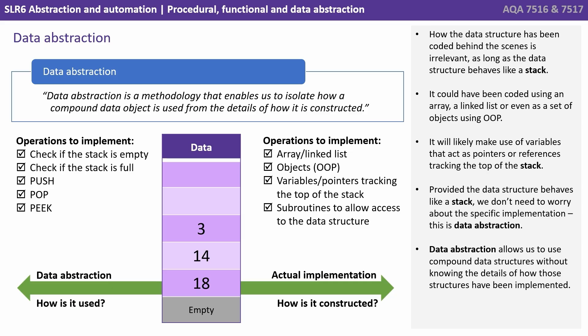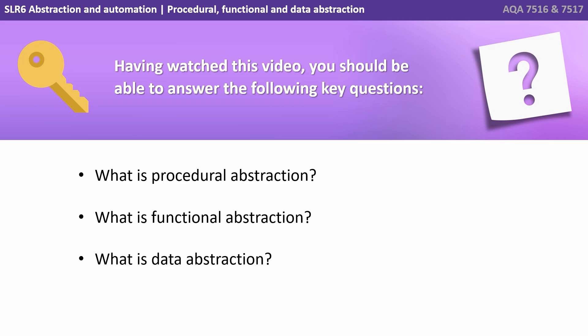And this is data abstraction. Data abstraction allows us to use compound data structures without knowing the details of how those structures have been internally implemented. Having watched this video you should be able to answer the following key questions: What is procedural abstraction? What is functional abstraction? And what is data abstraction?